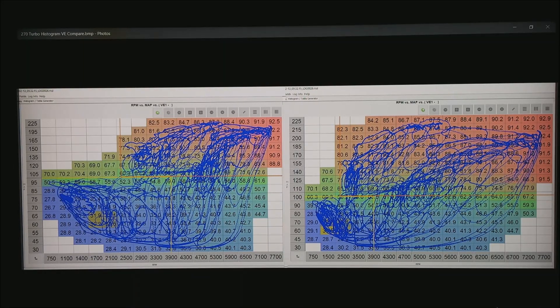That is a fairly non-linear change in volumetric efficiency. So you may want to actually even give more data points from about 75 to 120 to make that transition in tuning a little smoother.